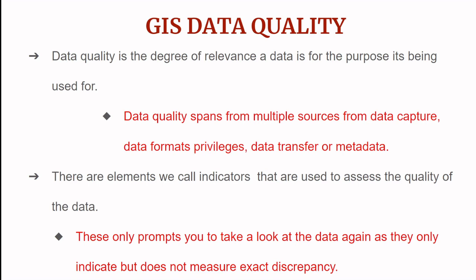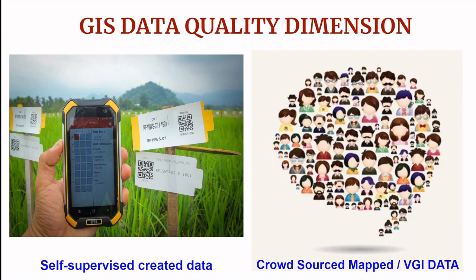There are elements we call indicators, and these indicators are used to assess the quality of the data. They are not a black-and-white stamp that says this data is quality or not — rather they give us an indication of whether we should doubt the quality of the data, prompting us to look at the data again and measure the exact discrepancies.